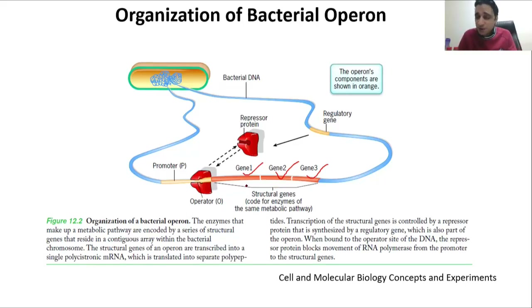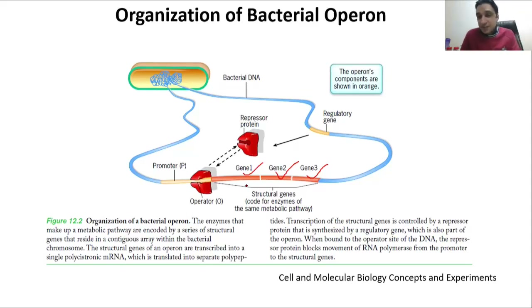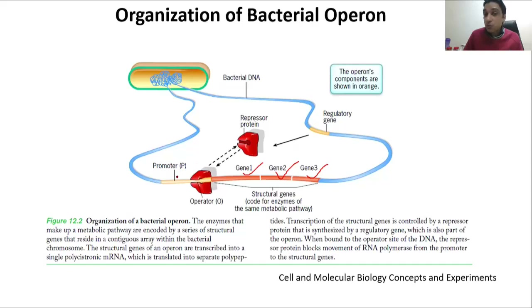It is not possible to activate one gene without activating all of them — it's all for one and one for all. Either all three will be expressed, or none of them will. One promoter controls all three.